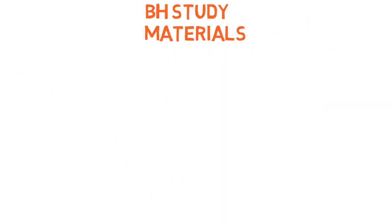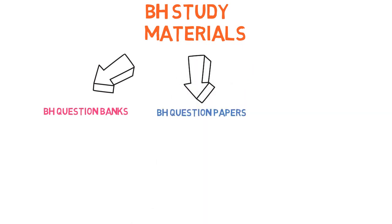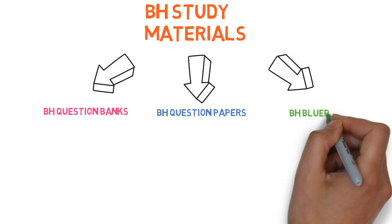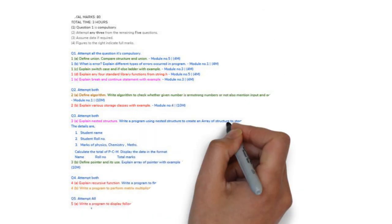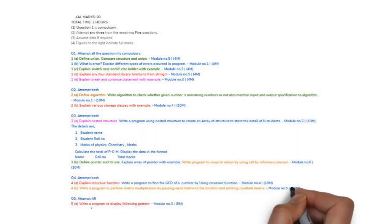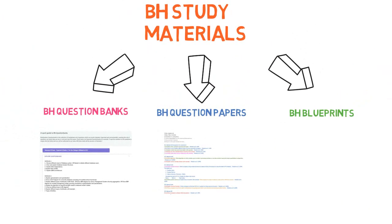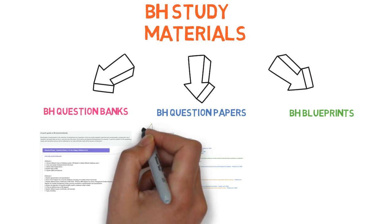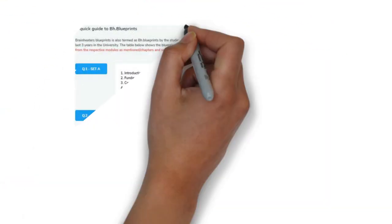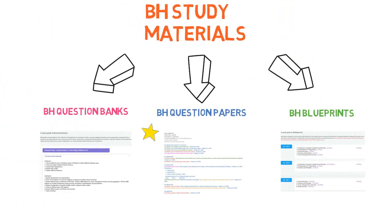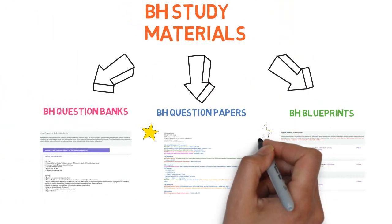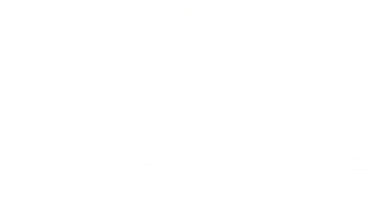We also have all the study materials ready for you on the Brain Eaters website. Those are Brain Eaters Question Marks, Brain Eaters Question Papers, and Brain Eaters Blueprints. In Brain Eaters Question Marks, we have all the important questions ready so that you can study module-wise. In Brain Eaters Question Papers, we have all the important and repeated questions highlighted in different color schemes so you can observe which questions have repeated 2-3 times. In Brain Eaters Blueprints, we have an estimated blueprint wherein you'll get an idea of which modules appear in each question. Once you're done with all this, trust me, you can score more than 50 plus in ICE.